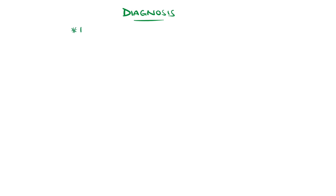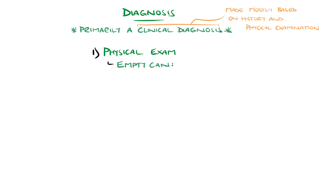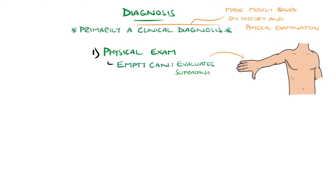The diagnosis is primarily clinical, based on history and physical examination. Provocative manoeuvres include the empty can test, where the patient abducts both arms with the thumbs pointing to the floor as if emptying a can. Pressure is applied which the patient resists. This evaluates the supraspinatus.